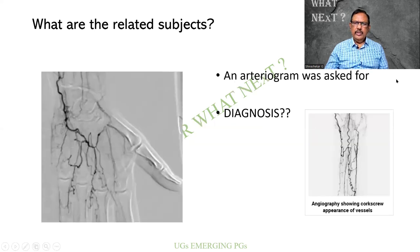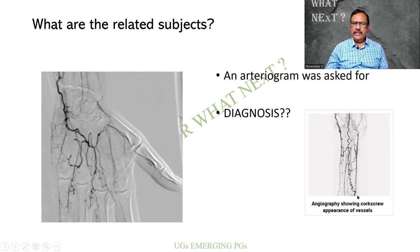This is the arteriogram of the hand and the leg. The angiography is showing a corkscrew appearance of the vessels. Any diagnosis?